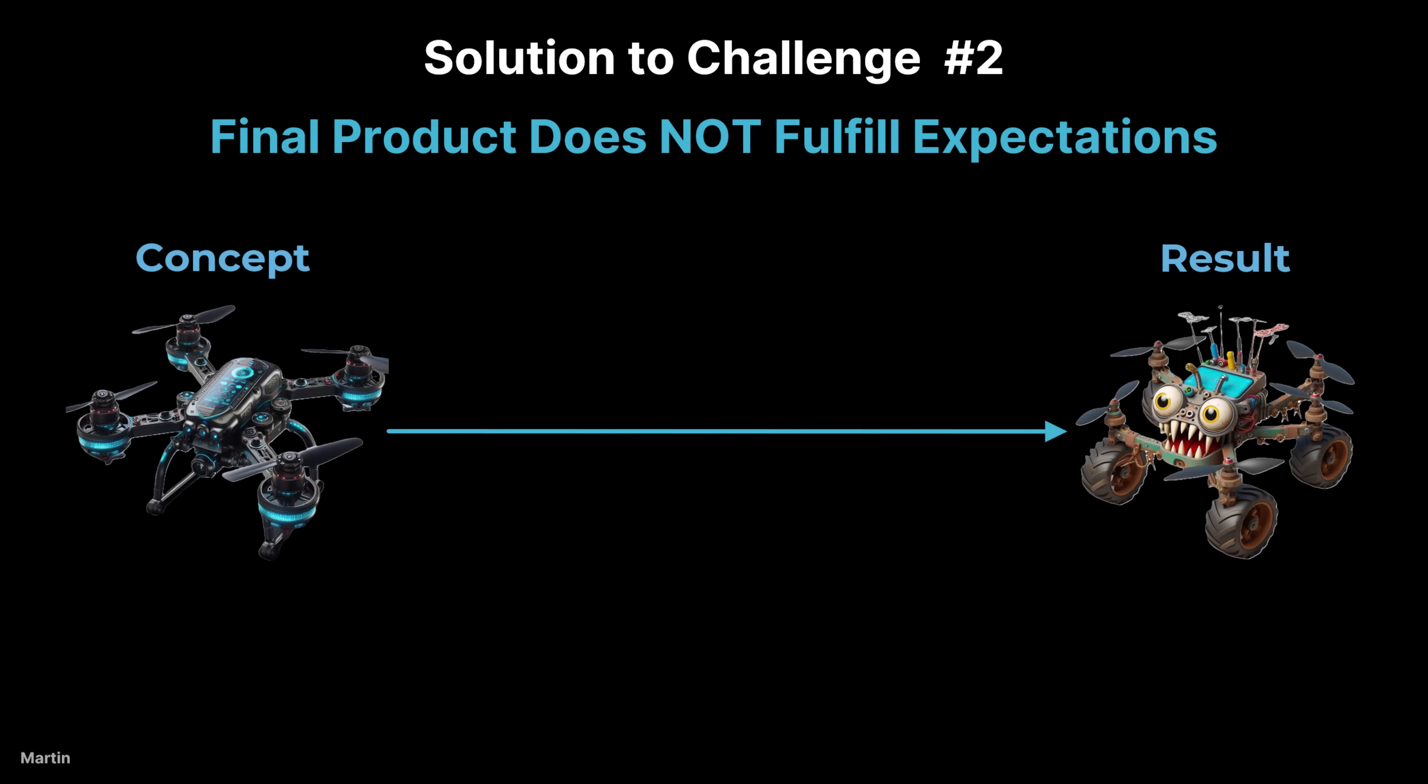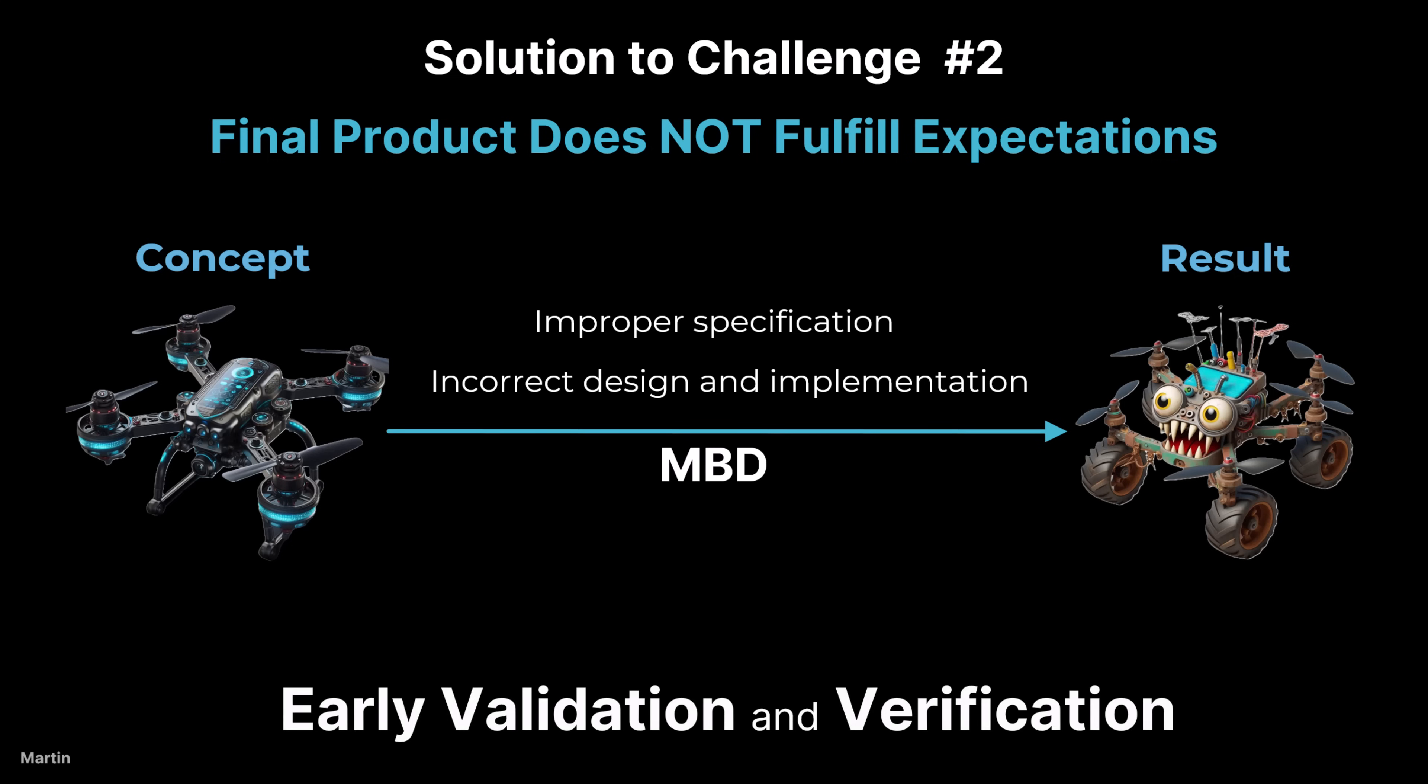Revisiting challenge number two: final product does not fulfill expectations. This issue often arises due to improper specifications, or incorrect system design or implementation. With model-based design, we can validate specifications early in the development process and verify the implementation at each stage, ensuring the requirements are correct and complete, and the final product aligns with requirements and performs as expected.